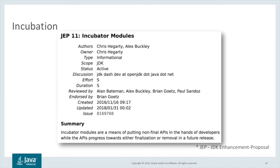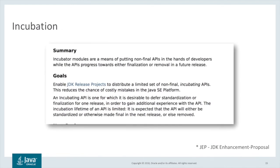JEP 11 is an informational JEP that describes what incubating features are, their purpose, and their delivery mechanism through incubator modules. Simply put, incubator modules are a means of putting non-final APIs in the hands of developers, while the APIs progress towards finalization, implementation, or removal in a future release. Incubating an API is desirable as it allows the standardization of an API to be deferred for a short period of time. The API is still part of the JDK download, so is available to the large number of Java developers. The incubation time allows for these developers to provide feedback on the API, as well as the ability for the API to incorporate that feedback before it is standardized.